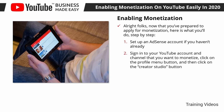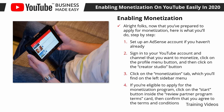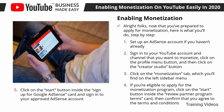Number three: click on the Monetization tab, which you'll find on the left sidebar menu. Number four: if you're eligible, click on the Start button inside the Review Partner Program Terms card, then confirm that you agree to the terms and conditions. Number five: click on the Start button inside the Sign Up for Google AdSense card, and sign in to your approved AdSense account. Now all you have to do is wait for approval, which can take 30 days or less. In that time, keep uploading awesome content and engaging with your audience.